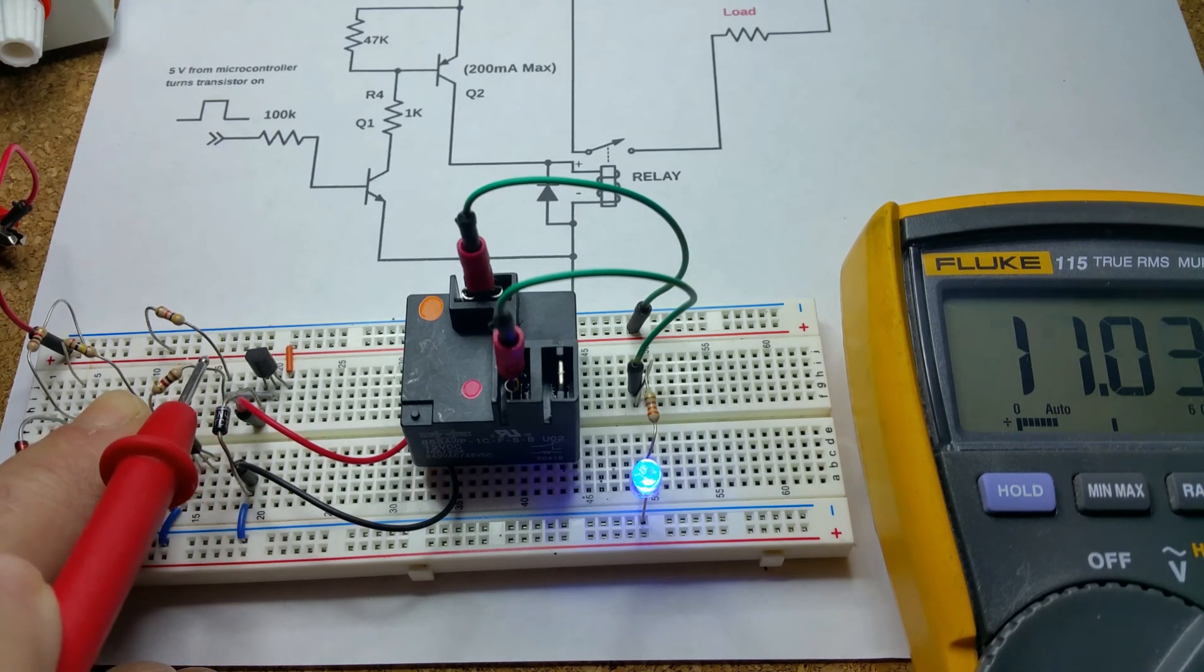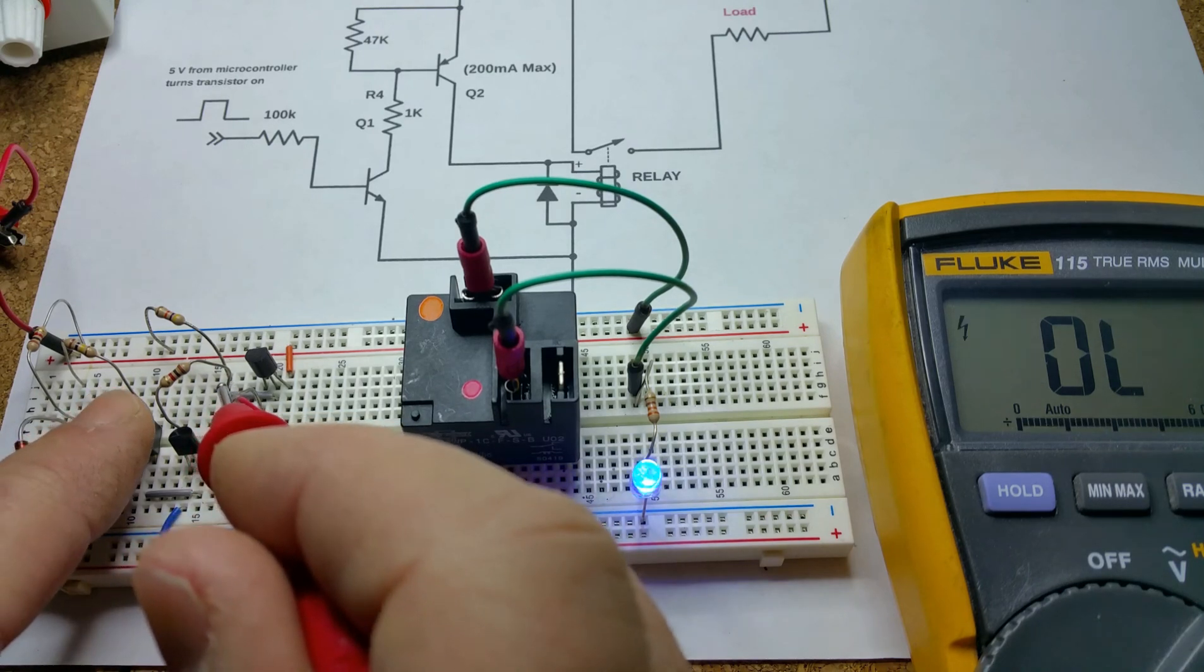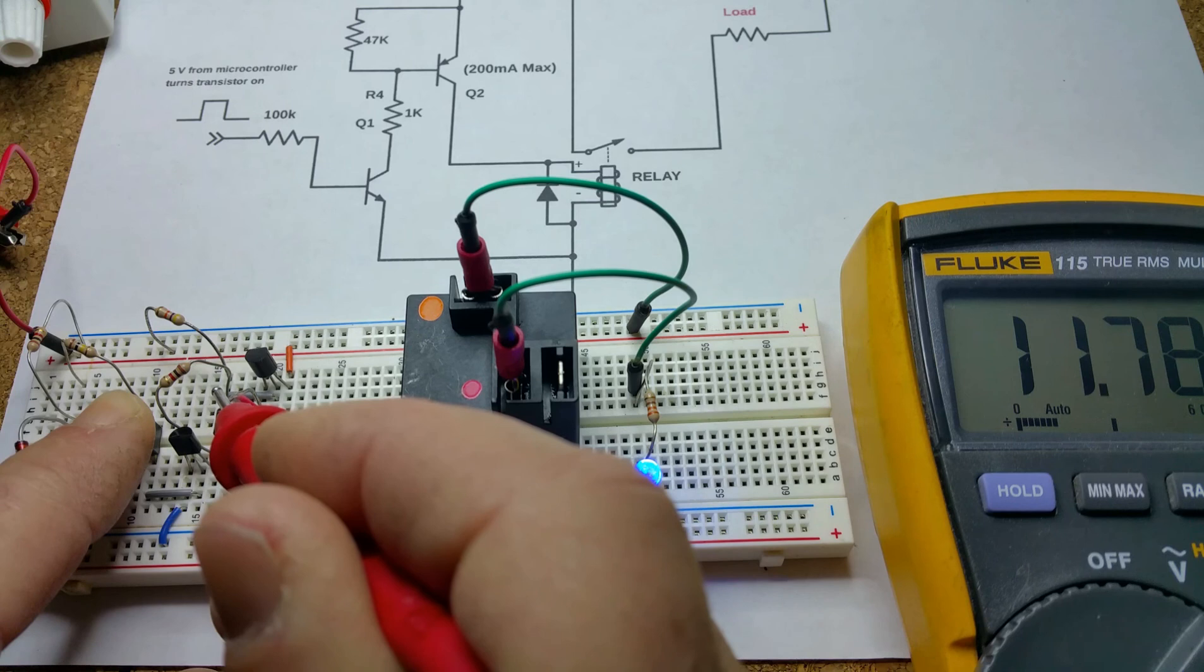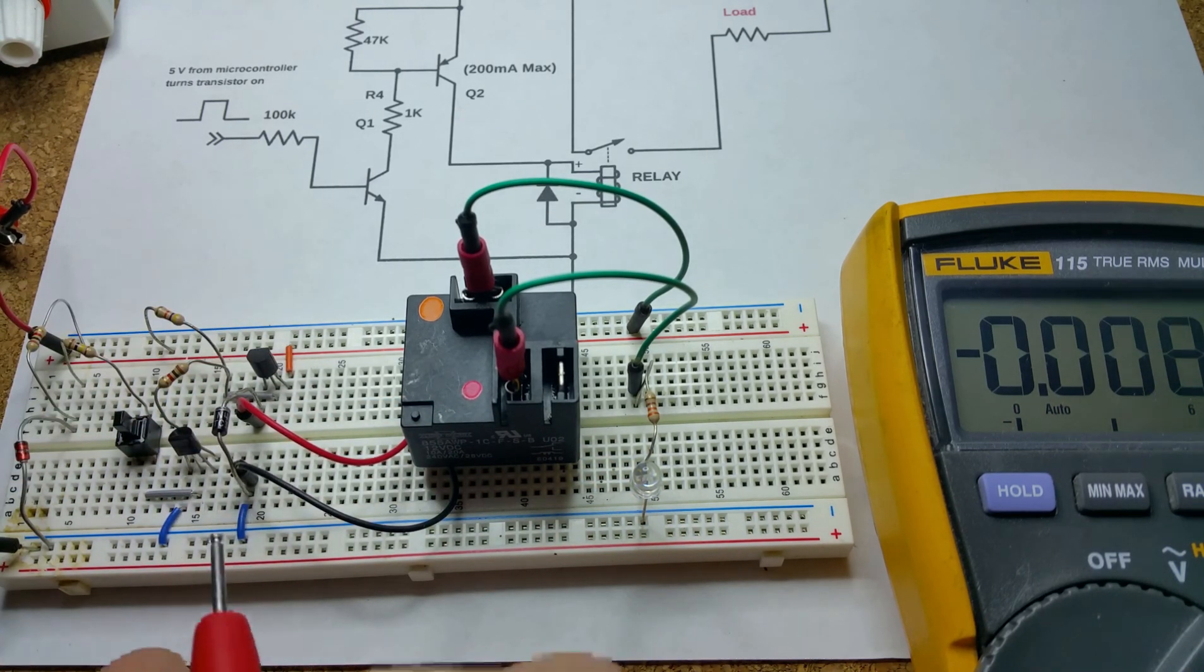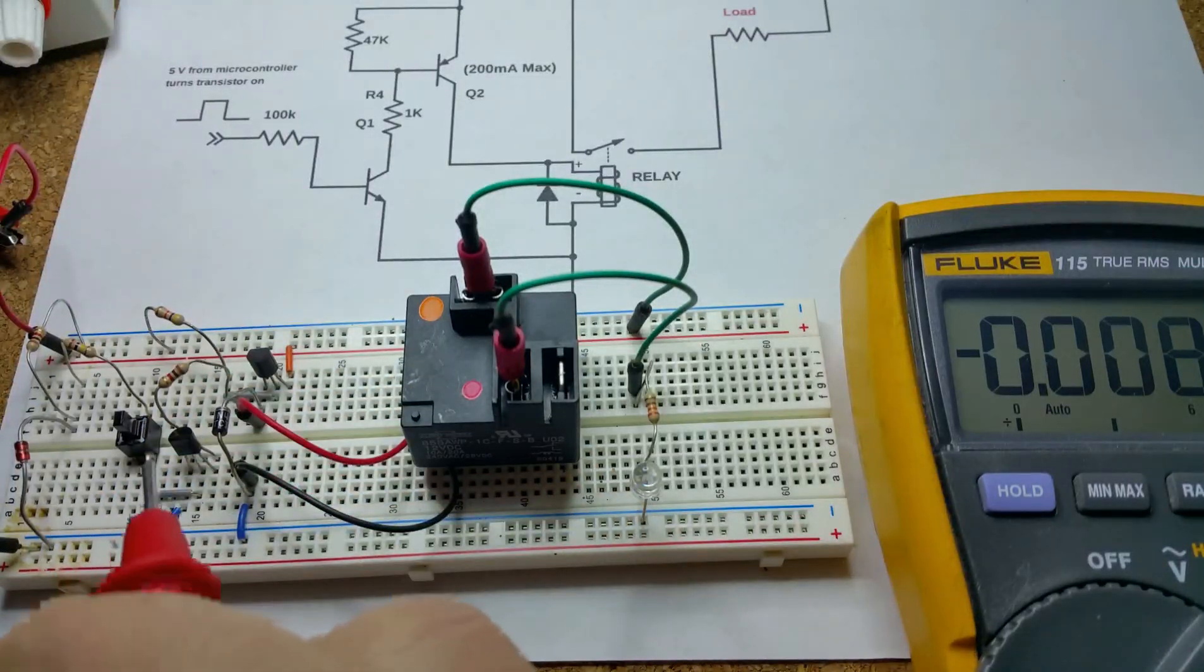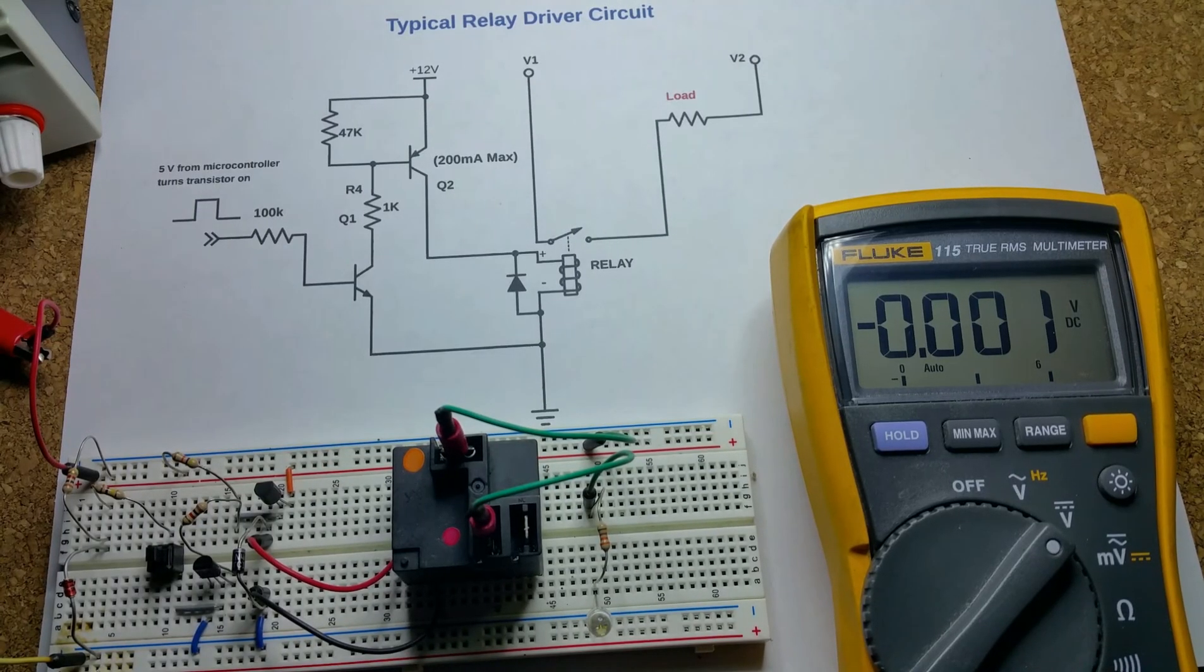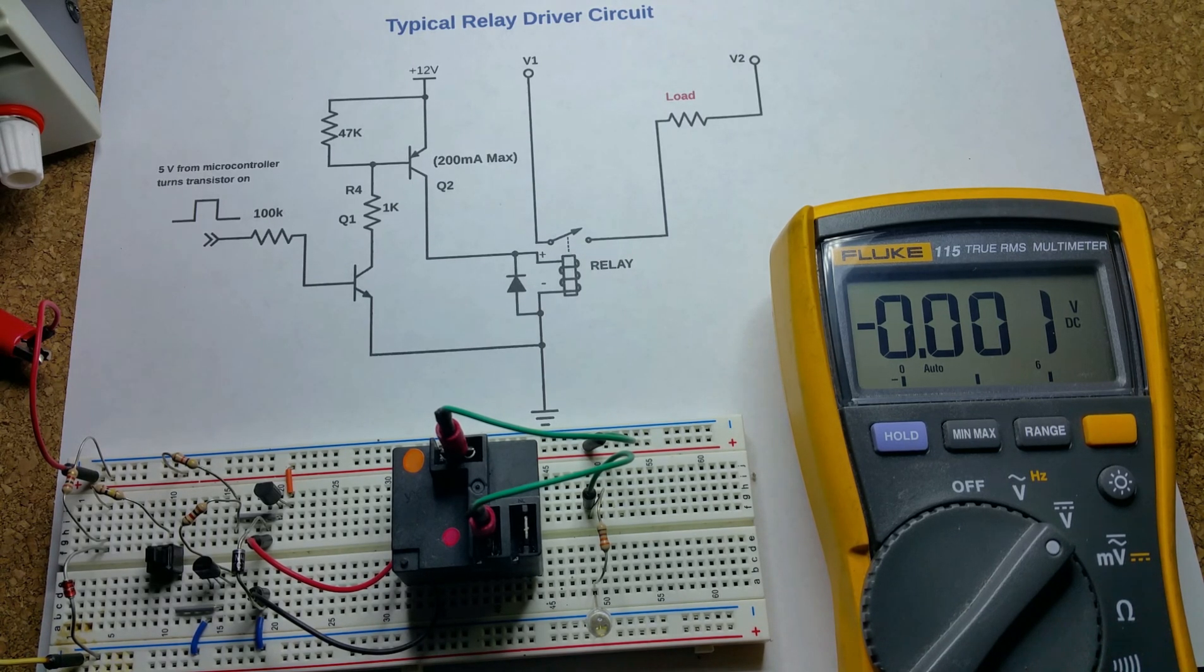This transistor is turned on—we've got almost 12 volts at the top of the relay. Got 11.78, so that transistor is only dropping about 0.2 volts, which is what we want. So I hope this video has been helpful in understanding how a relay circuit works, some of the things that can go wrong with it, and how to approach troubleshooting it.